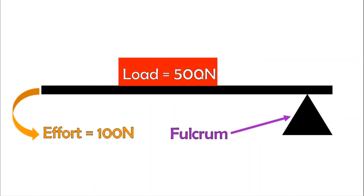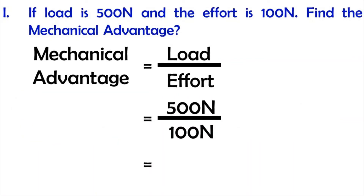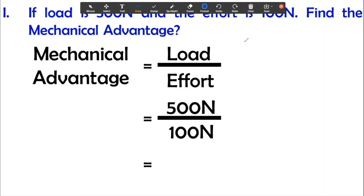In this case, load equals 500 N and effort equals 100 N. Let's see how we can find the mechanical advantage. Mechanical advantage is equal to load divided by effort. We can cancel the zeros and the Newton units, and then we can find the mechanical advantage as 5.